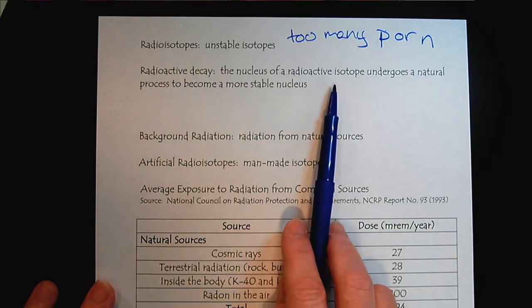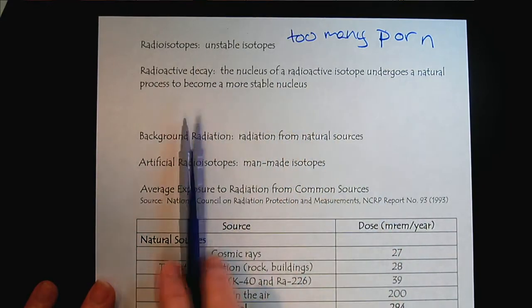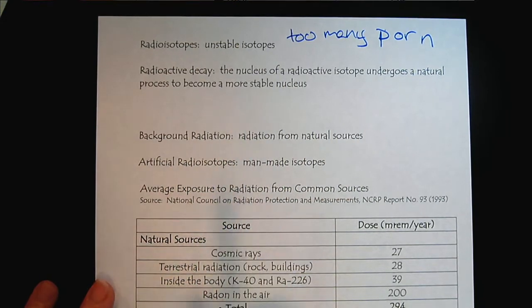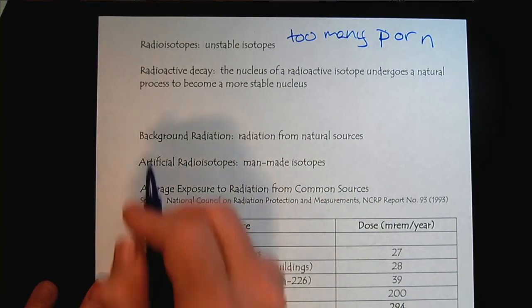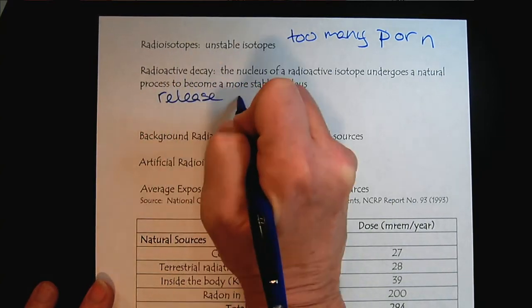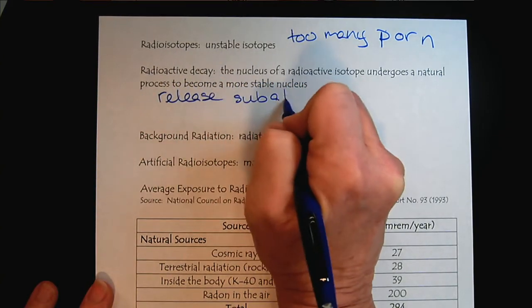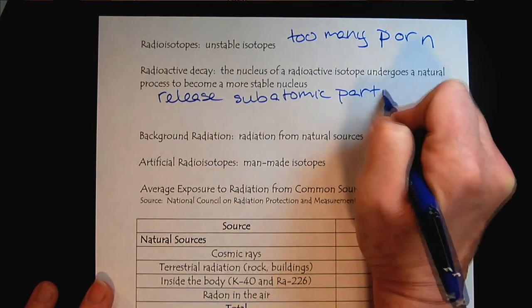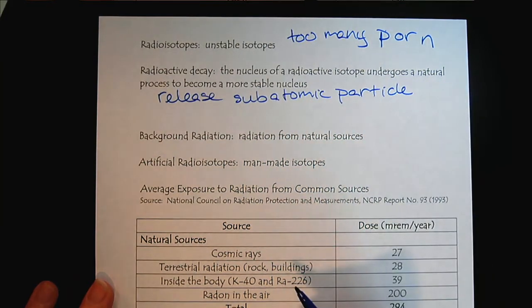The nucleus of the radioactive isotope undergoes a natural process to become more stable. And so how does the nucleus become more stable? It has to release subatomic particles and/or light or high energy electromagnetic radiation.